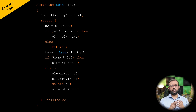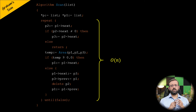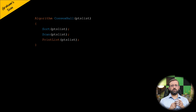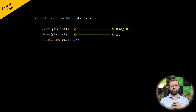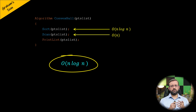The scan algorithm has a repeat-until loop that executes at most n times for n nodes in the doubly linked list, giving a time complexity of O(n). The convex hull algorithm first sorts the points with a time complexity of O(n log n), then calls the scan algorithm at O(n), and the print statement is a primitive operation. Therefore, the overall time complexity of the Graham Scan algorithm is O(n log n).